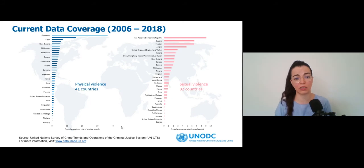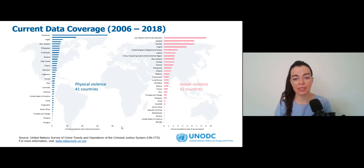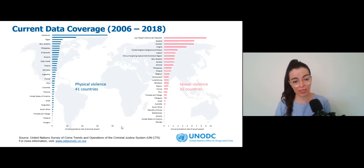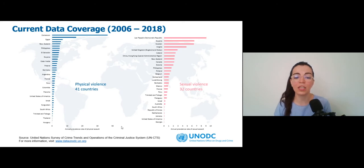Data for this SDG Indicator are also collected from member states through UNODC's annual data collection tool, the United Nations Crime Trends Survey, also known as the UNCTS. Currently, data are available only for physical and sexual violence. The coverage is still limited, as only 41 countries have produced data on physical violence at least once in the period between 2006 and 2018, and 32 countries on sexual violence. Looking at data for 2018 only, those numbers are significantly lower, as only 15 countries have produced data on physical violence and only 9 on sexual violence.